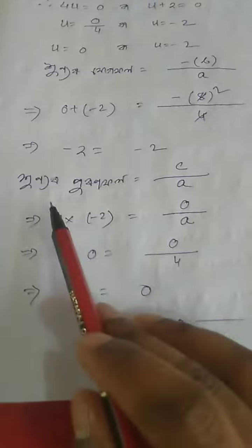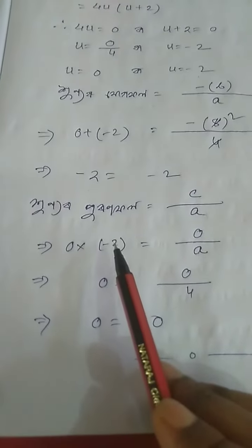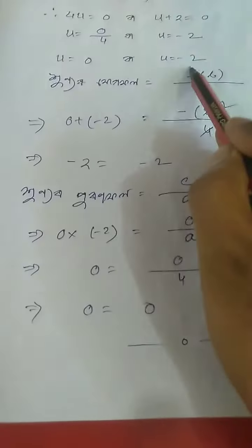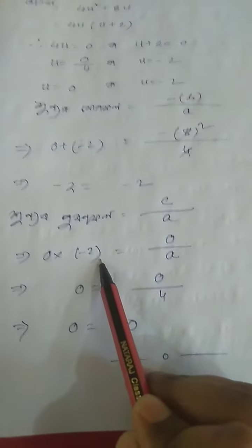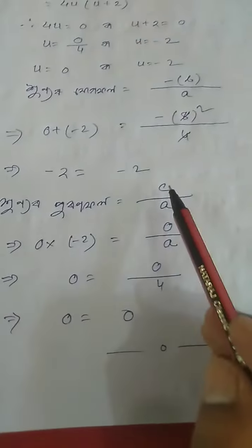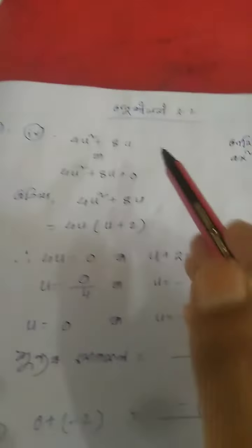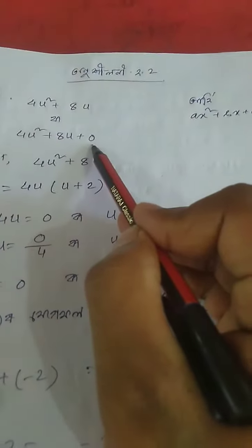So u minus 2 is equal to minus 2, then u plus 2 is equal to minus 2. We call it c by a. So we were doing that. How many inputs are here?